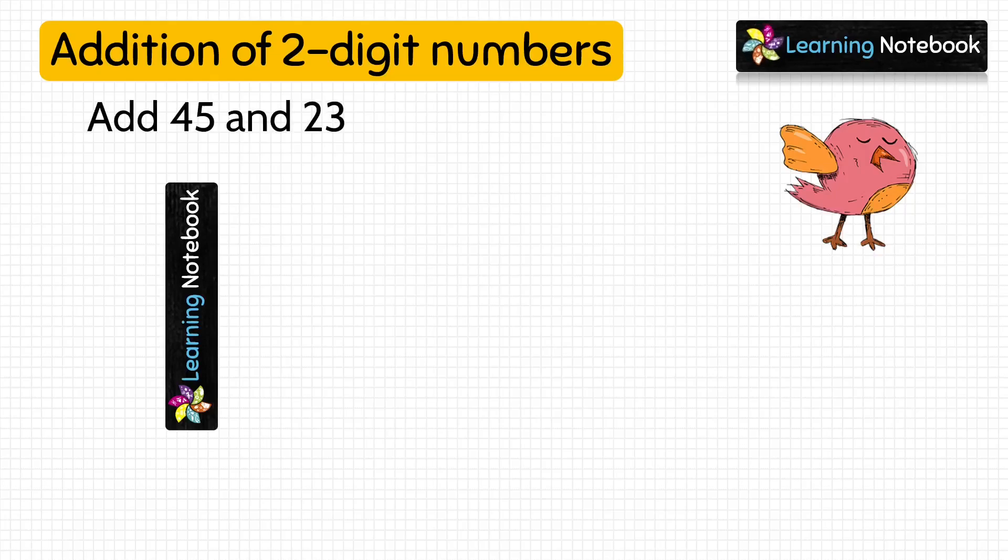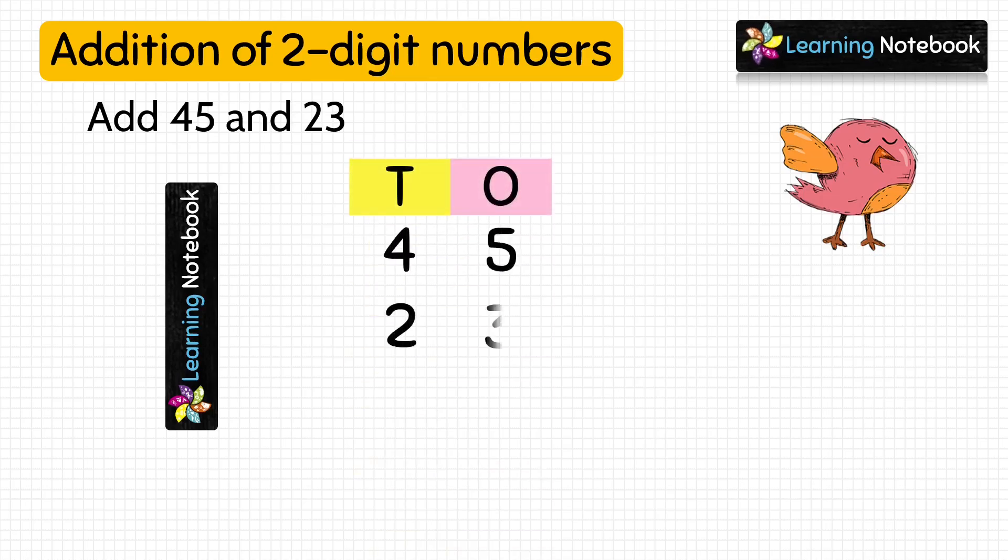Question is: add 45 and 23. So to add these two numbers, we will first write them in column form as shown here. Now students, we will add the digits at ones place, so we will do 5 plus 3, which is equal to 8.